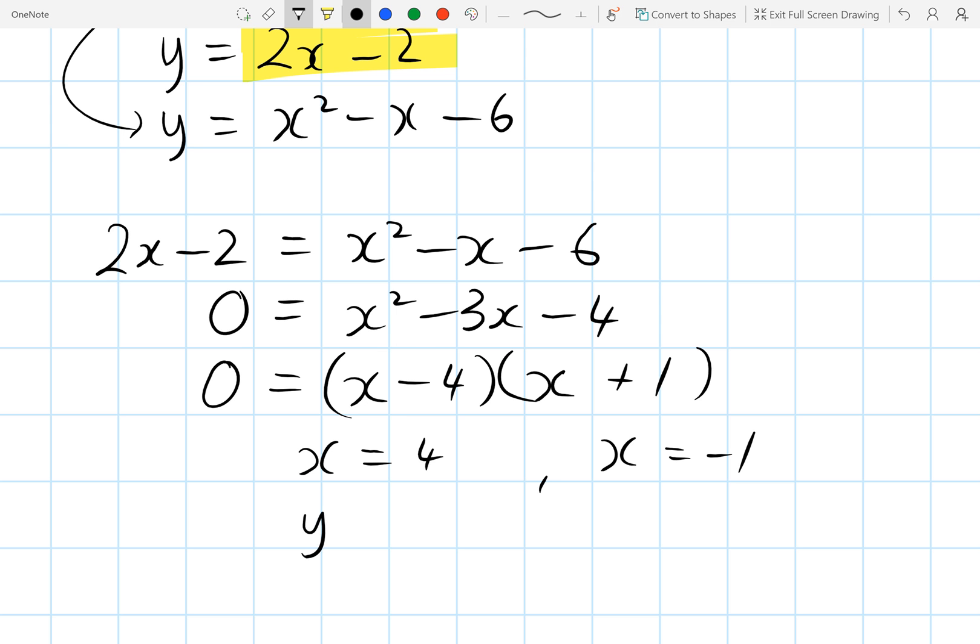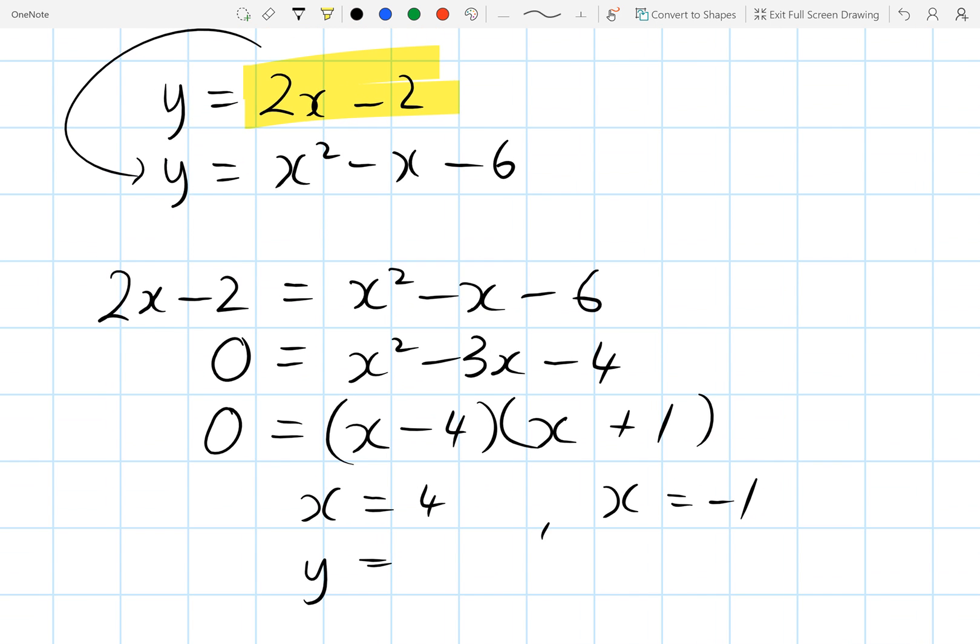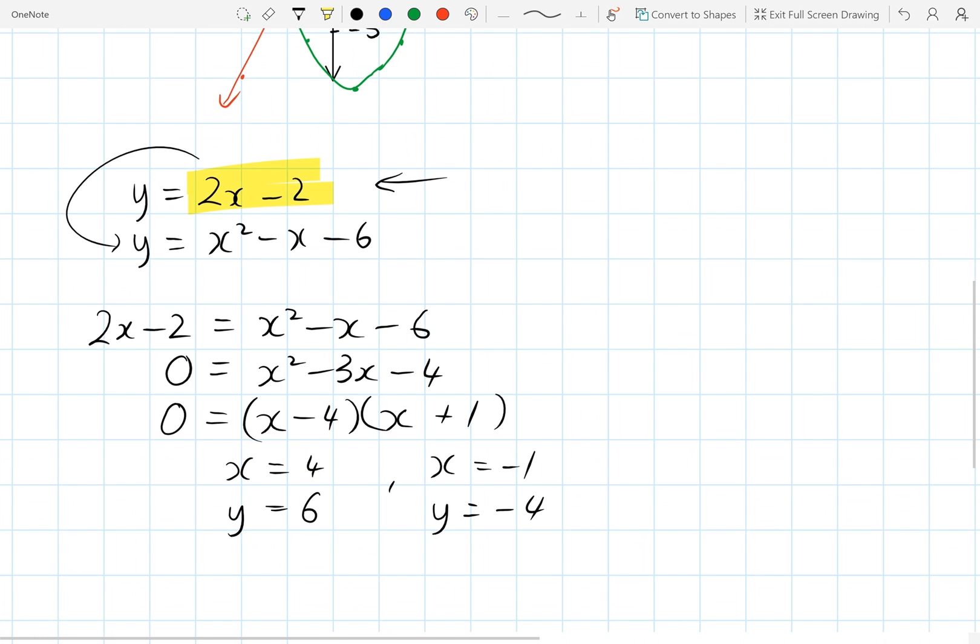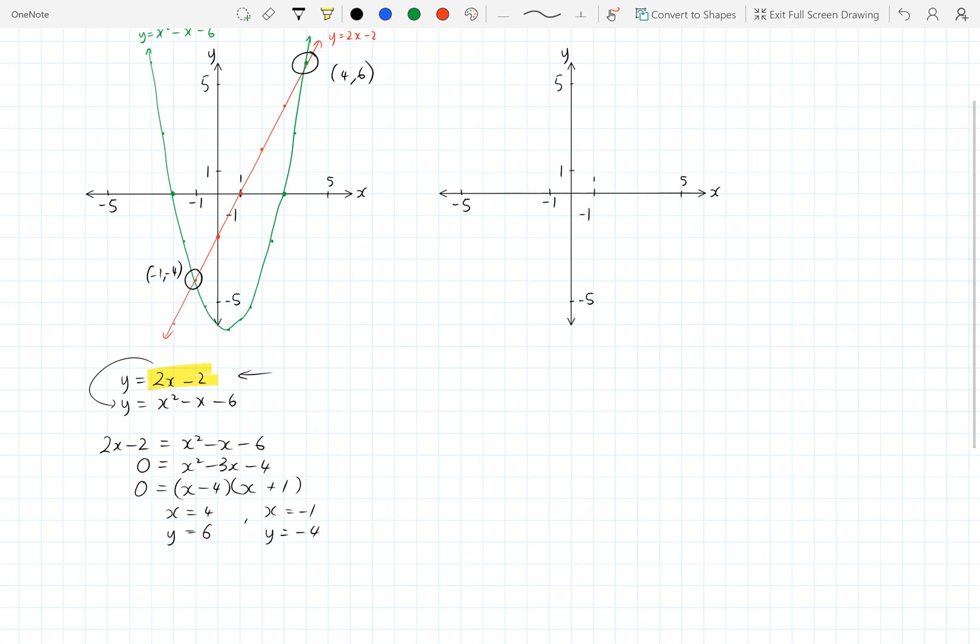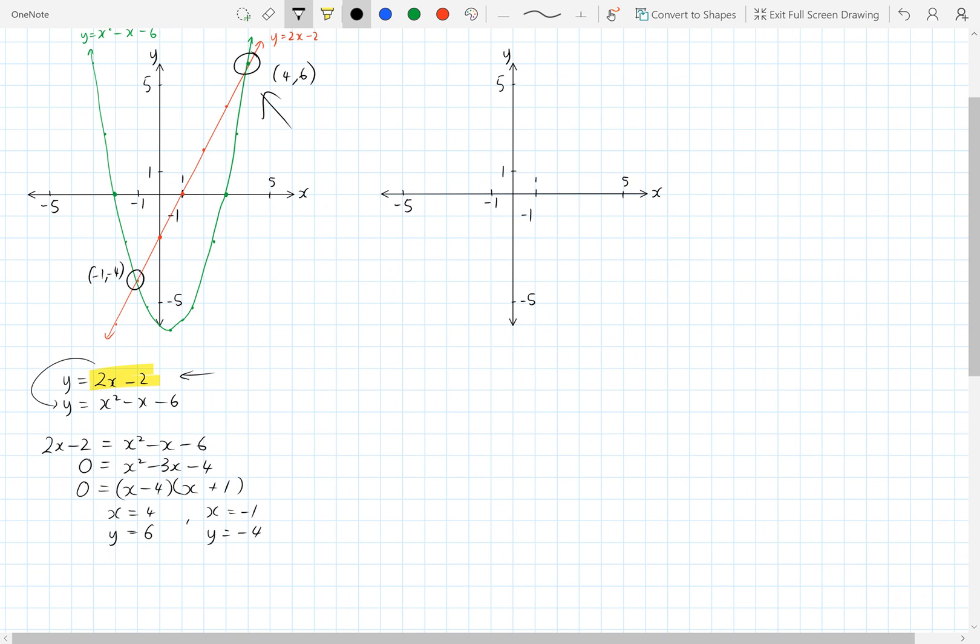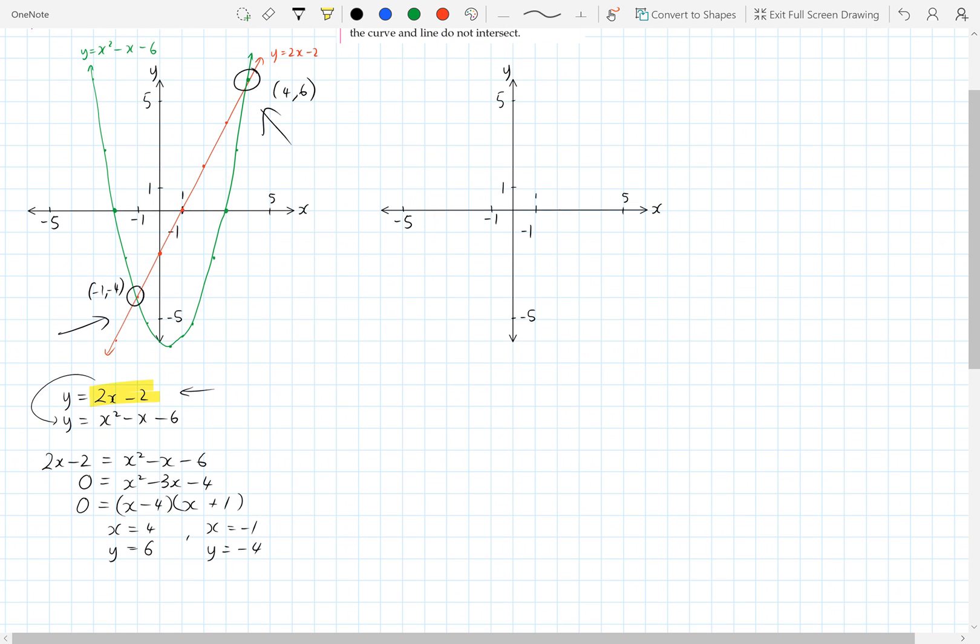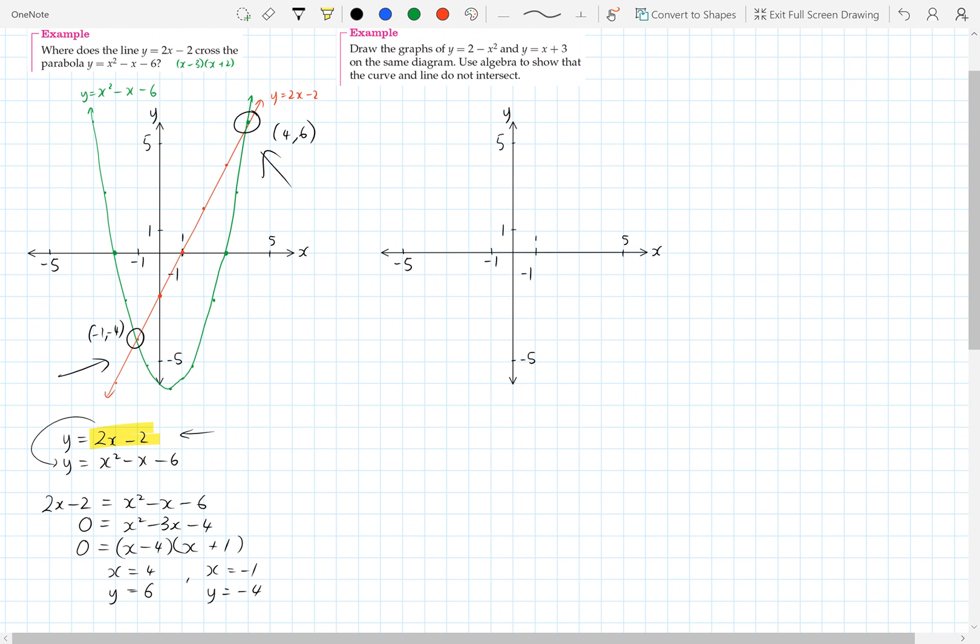And then our y results, putting them back into our original equation up here, we'd have 8 minus 2, which is 6, and negative 2 minus 2, which is negative 4. And you'll notice that those give us the same coordinates as our points of intersection of our graph. So it's just worth remembering that the points of intersection of graphs and the solving of simultaneous equations give the same results.